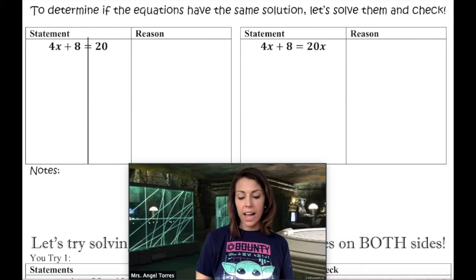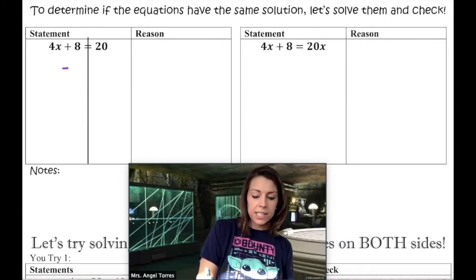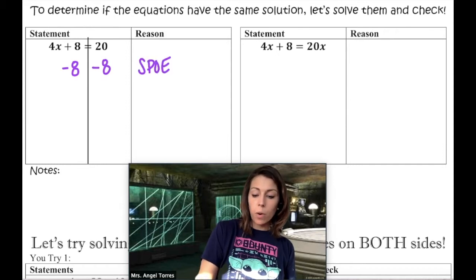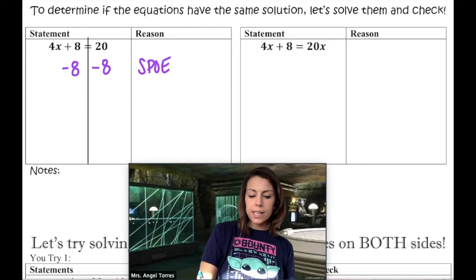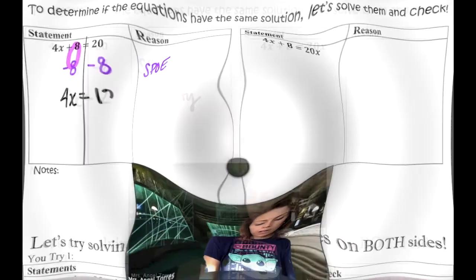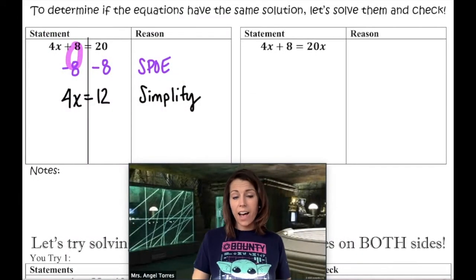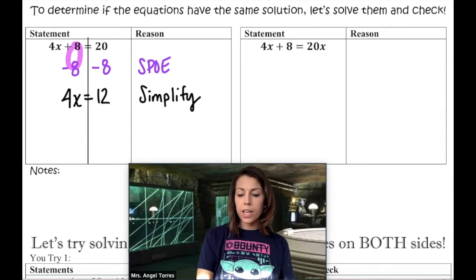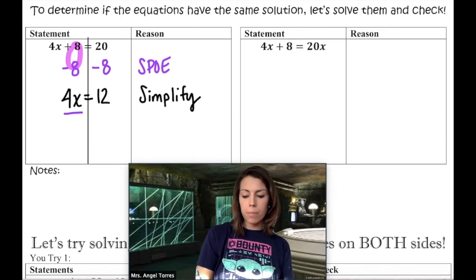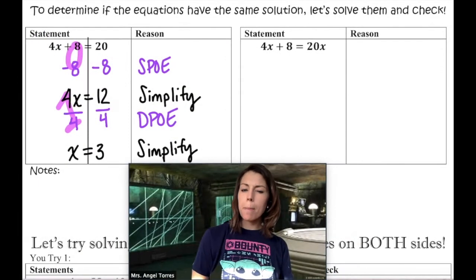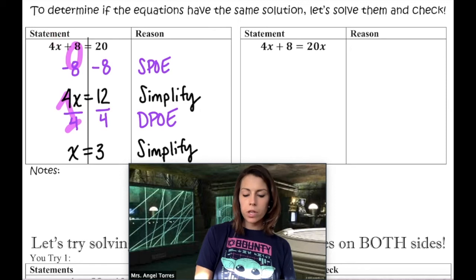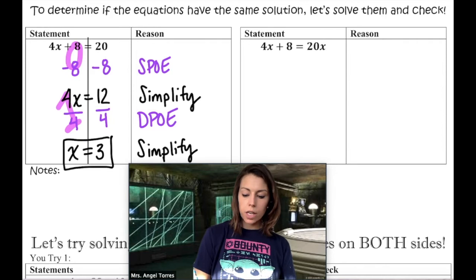I'm going to make a zero term by subtracting 8 from both sides using my subtraction property of equality. That creates a zero term, and after simplifying I'm left with 4x equals 12. Now that I have one term on the left and one term on the right, I can divide both sides by 4 to create a big one factor. Quick mental check: 4 times 3 is 12, and 12 plus 8 is 20. So x equals 3 is the solution.